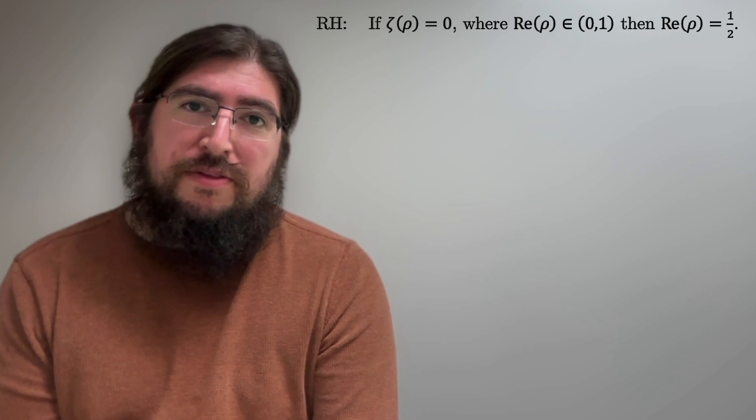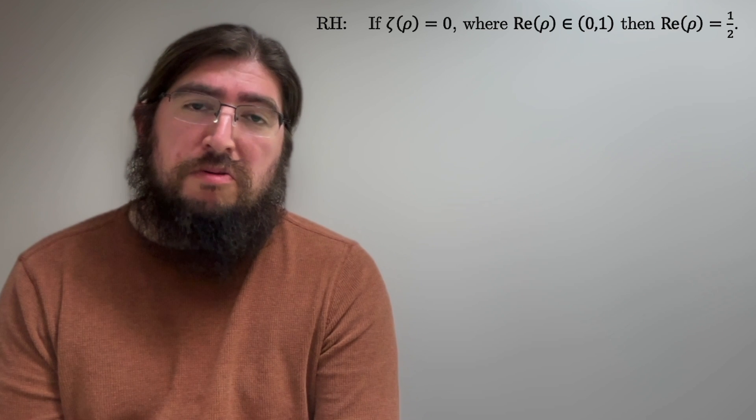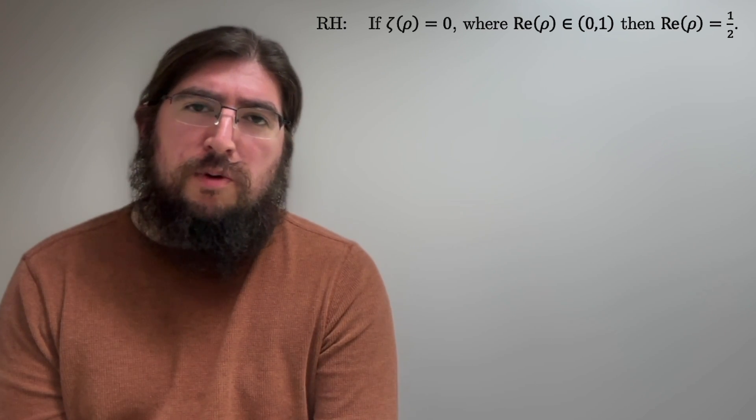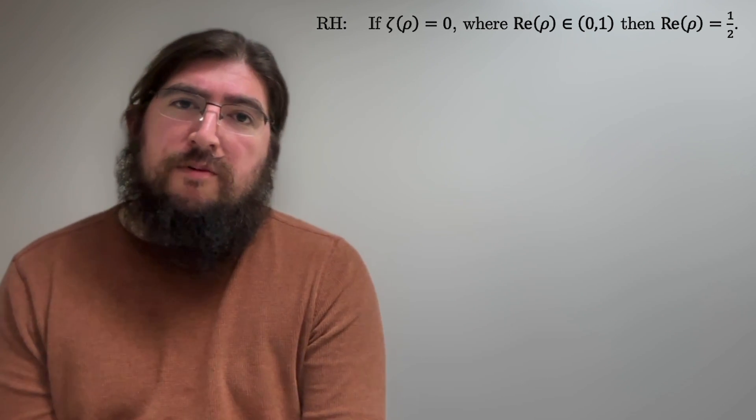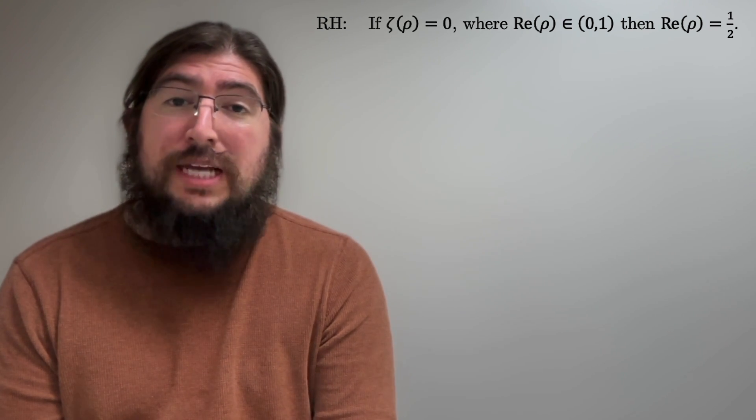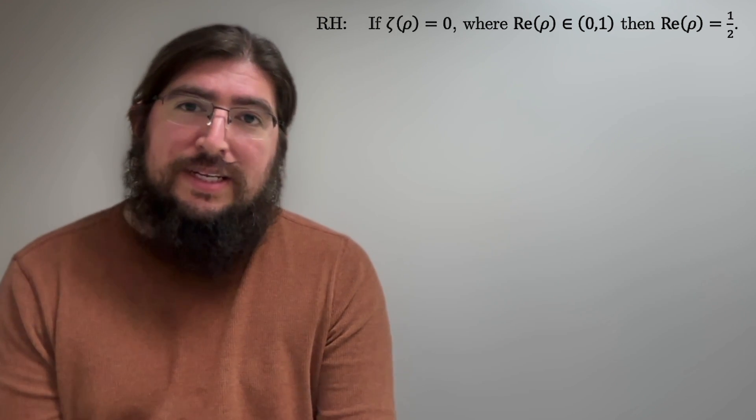Hello everyone. The Riemann hypothesis basically says that if the Riemann zeta function has a zero, let's call it rho, complex number rho, where the real part of rho is between 0 and 1, then it must be the case that the real part of rho is actually equal to 1 half. That's all it says.